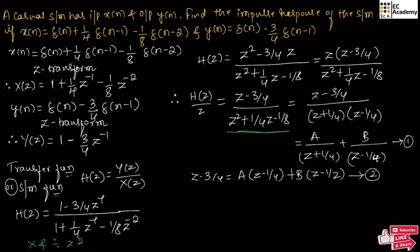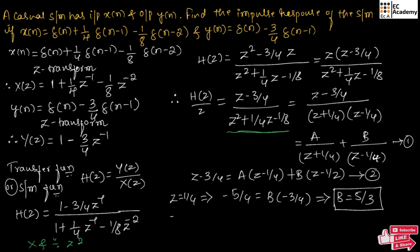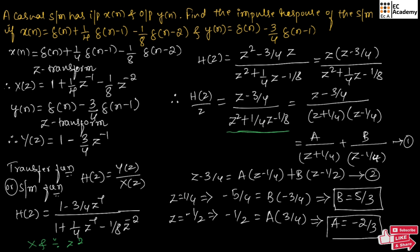In equation 2, putting z equal to 1/4, we get B equal to 5/3. In equation 2, putting z equal to minus 1/2, we get minus 1/2 minus 3/4 equal to A times 3/4. From this, we can write A equal to minus 2/3. So we have the values of A and B. Let us substitute these values into equation 1.